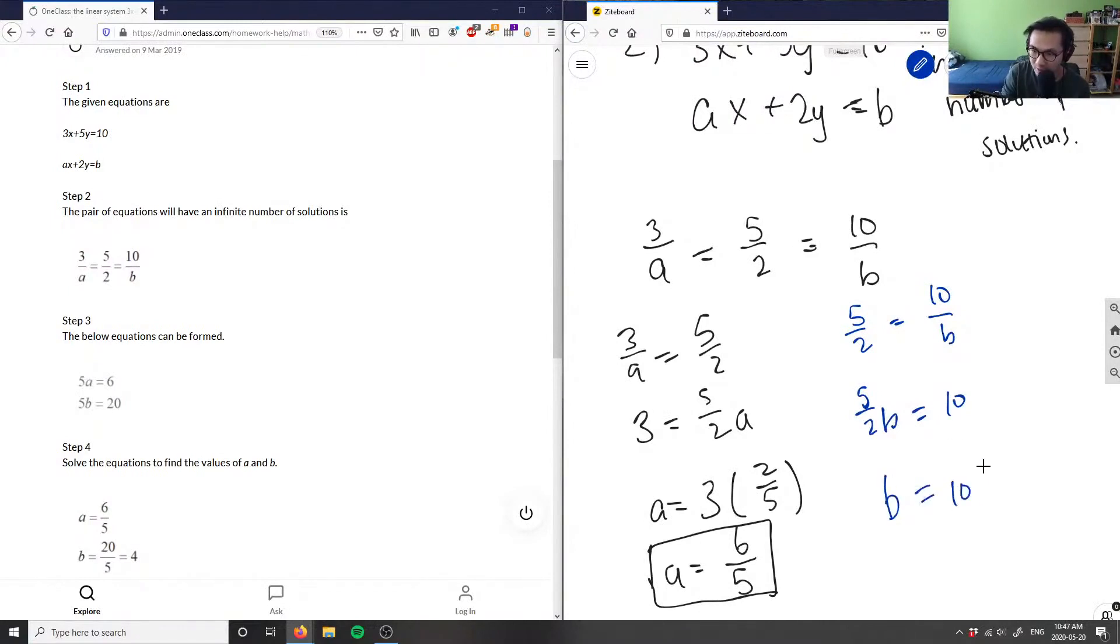So b equals 10 times the reciprocal of 5 over 2, which is 2 over 5. So b equals 10 times 2, which is 20, divided by 5, which equals 4.